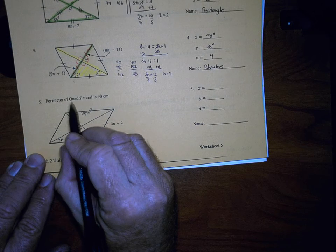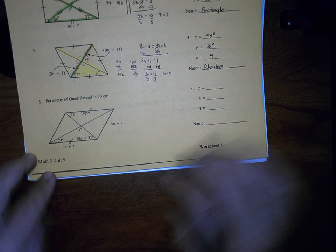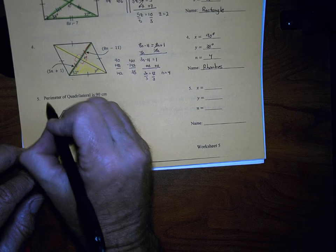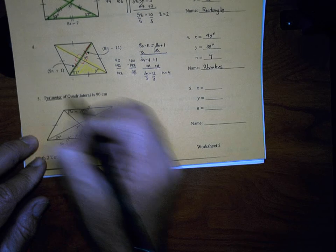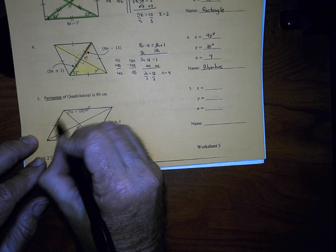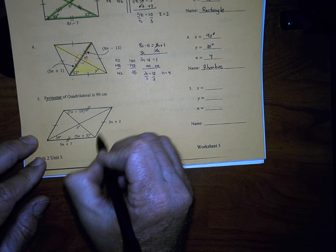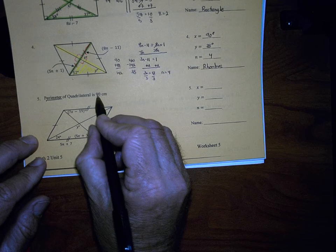Okay, moving on to number 5. Now, notice number 5 says the perimeter of the quadrilateral is 90 centimeters. So we're told that the perimeter, remember, that means when we add up all four of the sides, then that means that we're going to get 90.